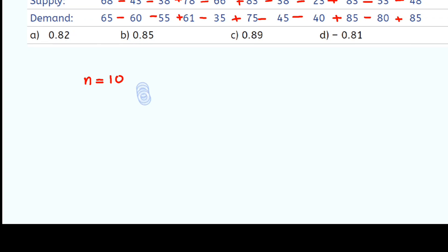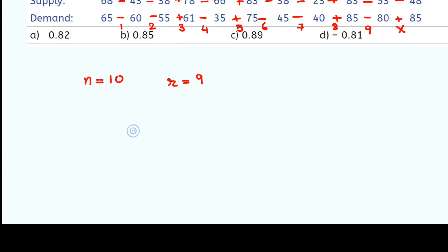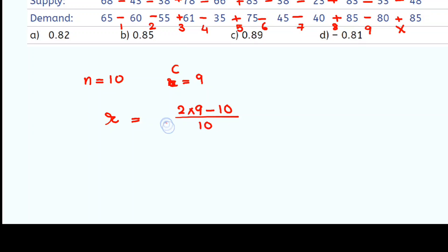Out of 10 comparisons, check where both signs are the same — the concurrent places. Counting: positions 1, 2, 3 are concurrent; then plus-plus gives 4, 5, 6, 7, 8, 9 are concurrent; but the last one is not. So C equals 9 out of N equals 10. Applying the formula: 2 times 9 equals 18; 18 minus 10 equals 8; 8 divided by 10 equals 0.8; square root of 0.8 equals approximately 0.89. Since the value inside was positive, R equals plus 0.89, which is option C.